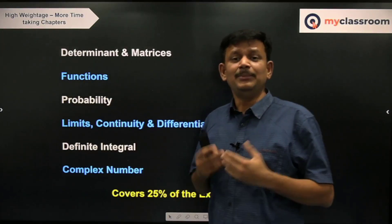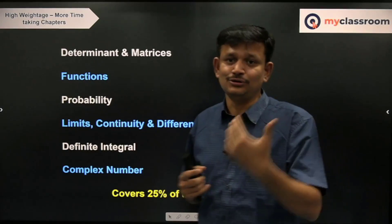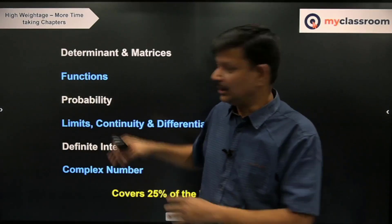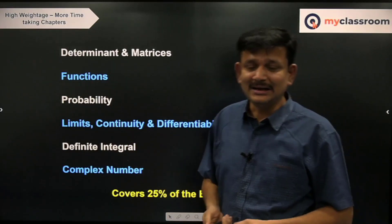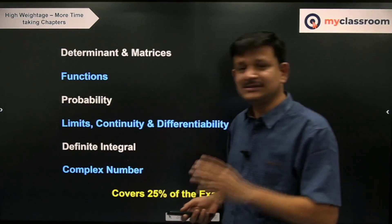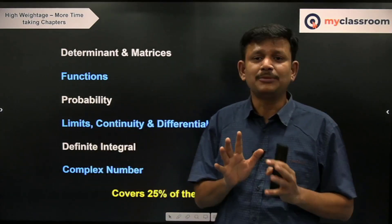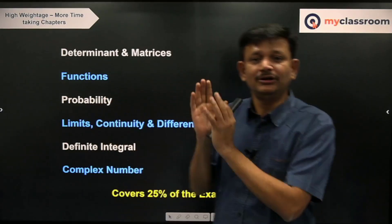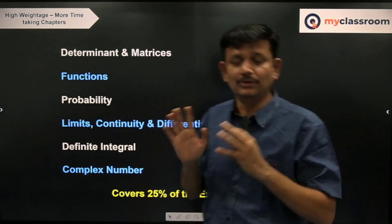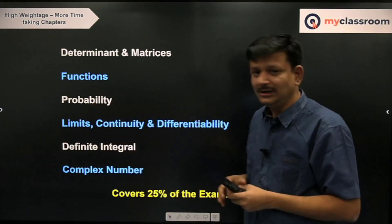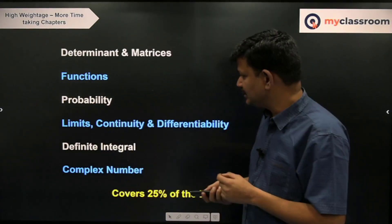Functions — know periodicity, even/odd nature, domain, and calculation of range. Do as many questions as possible here — roughly 10 to 15 questions on finding range and domain each. Probability — major focus should be on the classical definition of probability, then conditional probability, total probability theorem, and Bayes' theorem. If these four concepts are covered thoroughly, your probability chapter is complete. Before doing probability, be thorough with Permutations and Combinations.